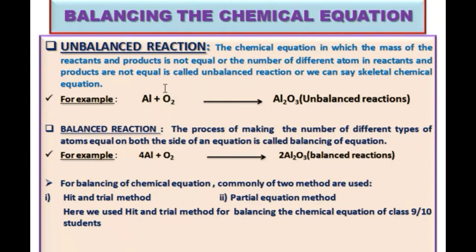We need to balance this reaction. The balanced reaction is the process of making the number of different types of atoms equal on both sides of the equation — this is called the balancing of an equation. In the example, four aluminiums react with oxygen to form two Al2O3 (aluminum oxide). Now it is a balanced reaction.